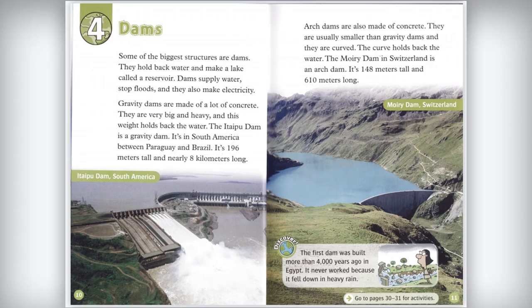Some of the biggest structures are dams. They hold back water and make a lake called a reservoir. Dams supply water, stop floods, and also make electricity. Gravity dams are made of a lot of concrete — they are very big and heavy, and this weight holds back the water. The Itaipu Dam is a gravity dam between Paraguay and Brazil. It's 196 meters tall.